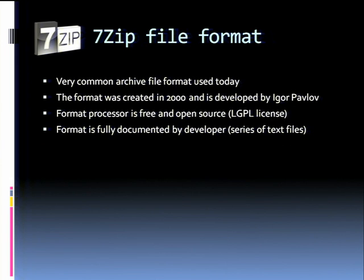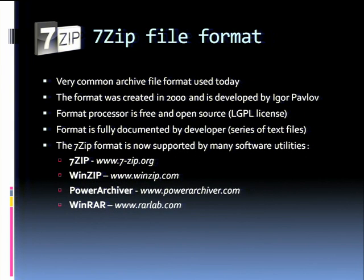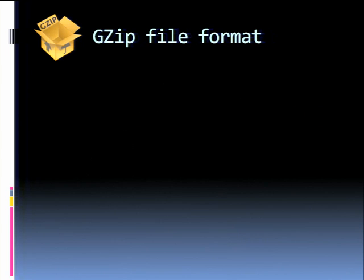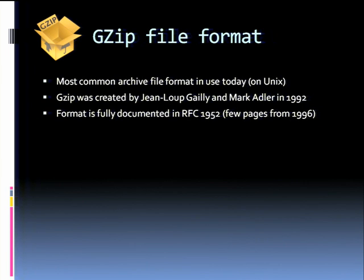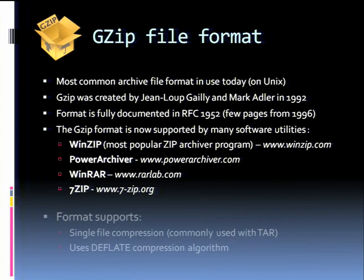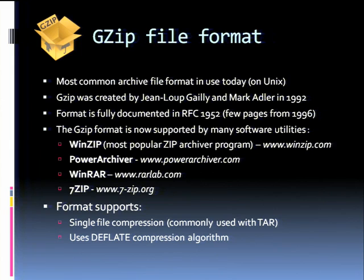7-Zip is an open source format that started in 2000, developed by Igor Pavlov. It is fully documented through a series of text files. Its native processor is 7-Zip, and all the other major tools also support it. It has multi-disc spanning, encryption, and SFX, and uses its own LZ variation called LZMA for compression. The GZip file format is most commonly found on Unix. It was created in 1992 and documented in just a few pages in 1996. It only supports compressing a single file — to compress multiple files, you must bind them together with another program such as tar, then compress the result. It uses only the deflate algorithm.